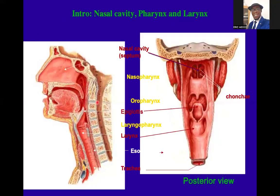As part of the introduction, we are looking at a vertical section through the head and neck, revealing the nasal cavity, pharynx, and larynx. That is the nasal cavity with the nasal septum. Air will come all the way here to the pharynx and then to the larynx. This is the epiglottis, that is the laryngeal opening. Then that is the esophagus and then the trachea.